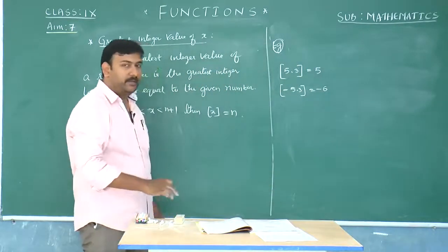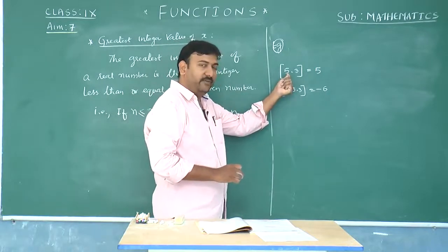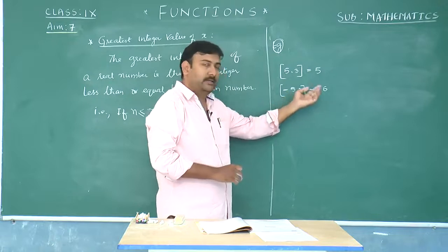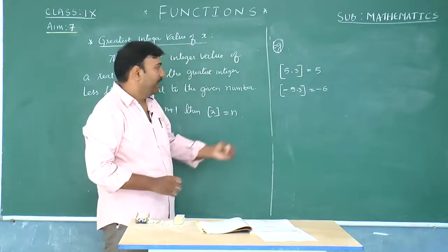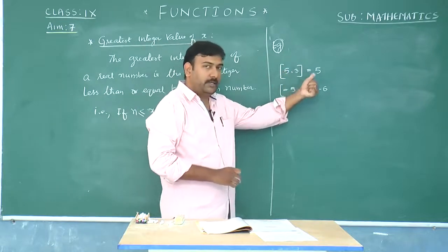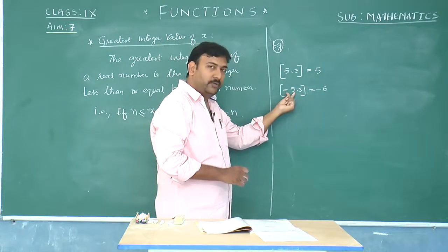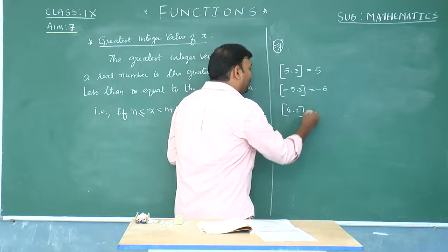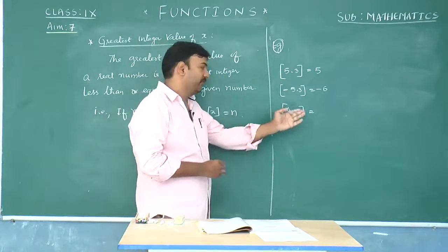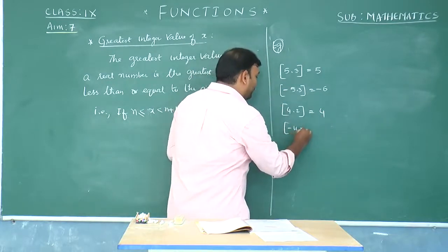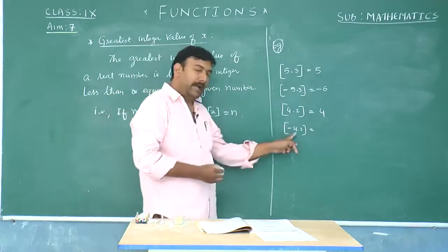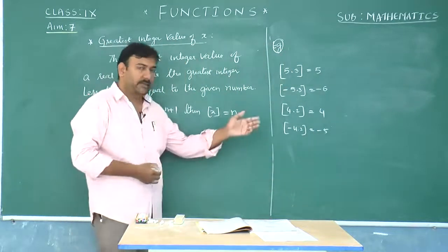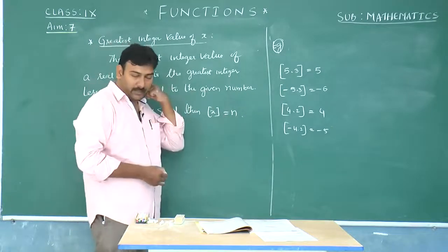Whenever the number is positive, the integral part of it is going to be the answer. Whenever the number is negative, take the integral part and add minus 1 to get the greatest integral value. For example, the greatest integral value of 4.2 is 4, since it is a positive number. For a negative number like minus 4.2, take the integral part minus 4 and add minus 1 to get minus 5.